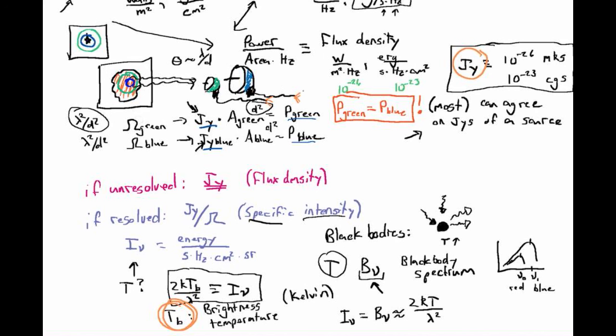So when you make your actual measurements, you'll probably be measuring power or power per hertz. To relate that back to what you measured on the sky, you'll want to take out the effects of your instrument — and that's where you'll come back to units that everybody can agree on: Janskys and brightness temperature. Thanks for listening.